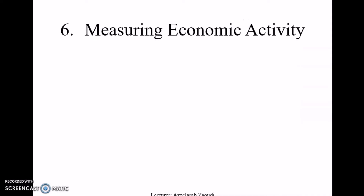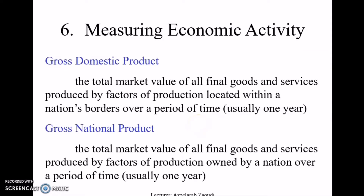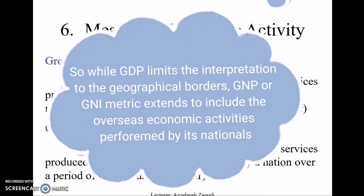Now let's move to the measurements of economic activity. First, Gross Domestic Product: GDP is the total market value of all final goods and services produced by factors of production located within a nation's borders over a period of time, usually one year. The emphasis here is on 'final goods and services' and 'within the nation's borders.'